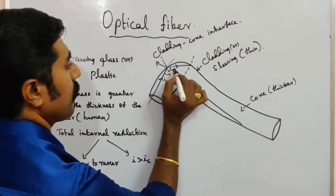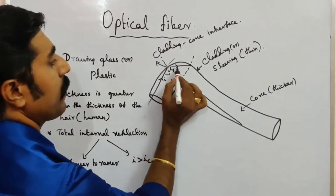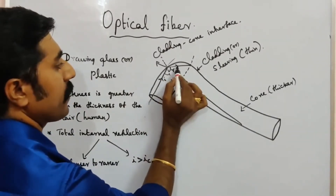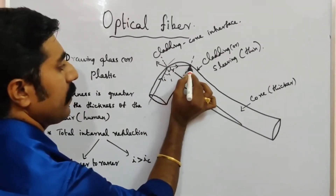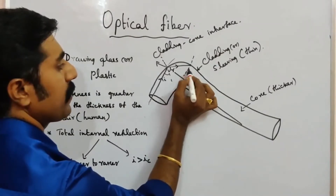This is the reflected ray. At the surface, the incident ray reflects.